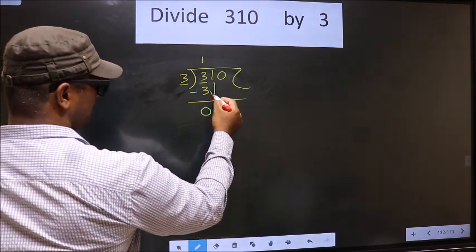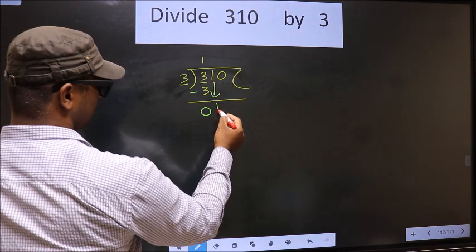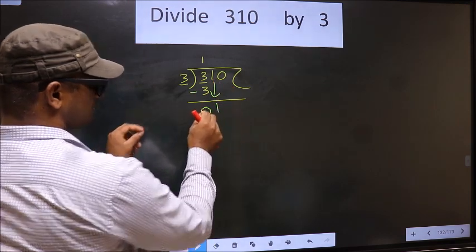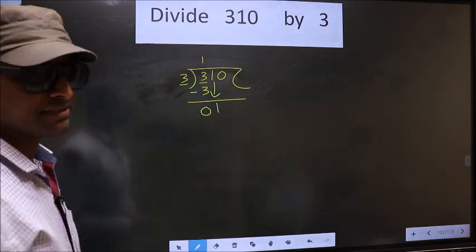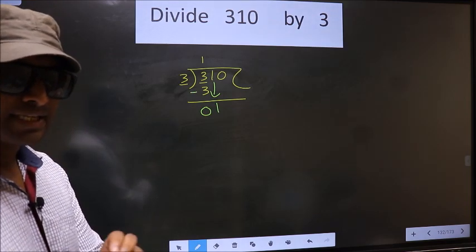Now bring down the next number—1 down. This is where the mistake happens, and the mistake is this.